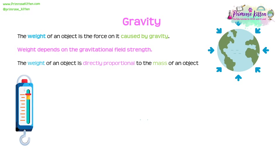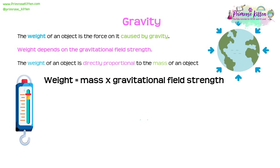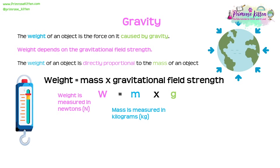The weight of an object is the force acting on it caused by gravity, meaning that weight depends on the gravitational field strength. If we were on Earth and then taken to the Moon, which has a smaller gravitational field strength, our weight would decrease. Weight is directly proportional to mass, and the equation is: weight equals mass times gravitational field strength. Weight is measured in newtons, mass in kilograms, and gravitational field strength in newtons per kilogram.